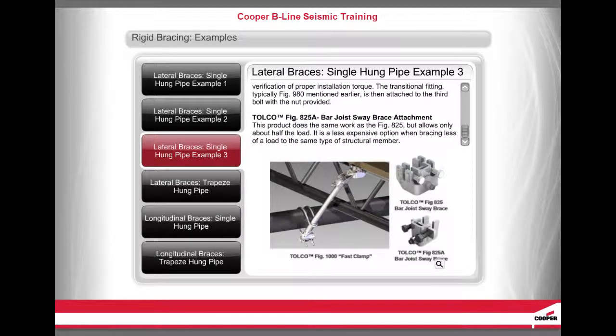The Tolco Figure 825A Bar Joist Sway Brace Attachment does the same work as the Figure 825, but allows only about half the load. It is a less expensive option when bracing a lighter load to the same type of structural member.